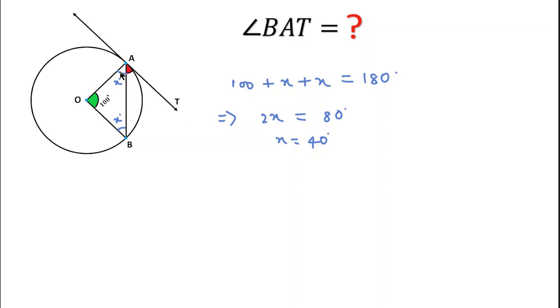So we can say that this angle will be 90 degrees. So if we subtract angle OAB, that is this angle x degrees, if we subtract from this 90 degrees, then we get angle BAT.